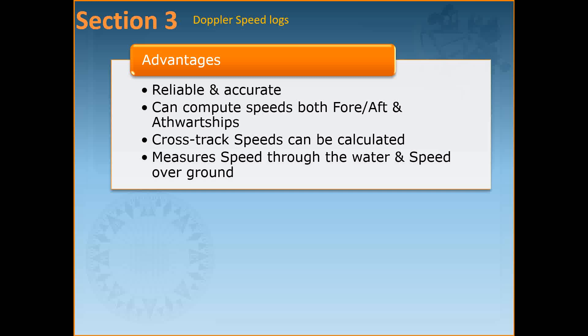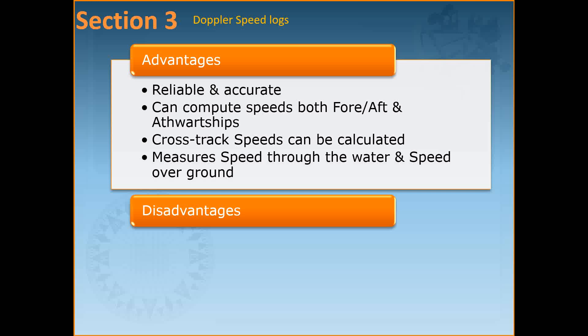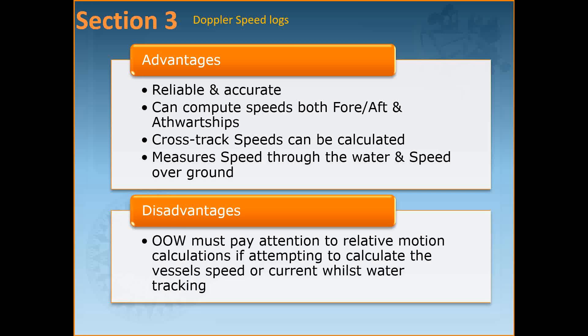The advantages of Doppler logs are that they are very reliable and accurate. They can compute speeds both forward and aft and athwartship, compute cross-track speeds, and measure speed through the water as well as speed over the ground — which is not the case with electromagnetic logs, which can only measure speed through the water. The disadvantage is that the officer of the watch must pay attention to relative motion calculations if attempting to calculate the vessel's speed or current whilst water tracking. I hope this was a helpful lecture on the Doppler log.